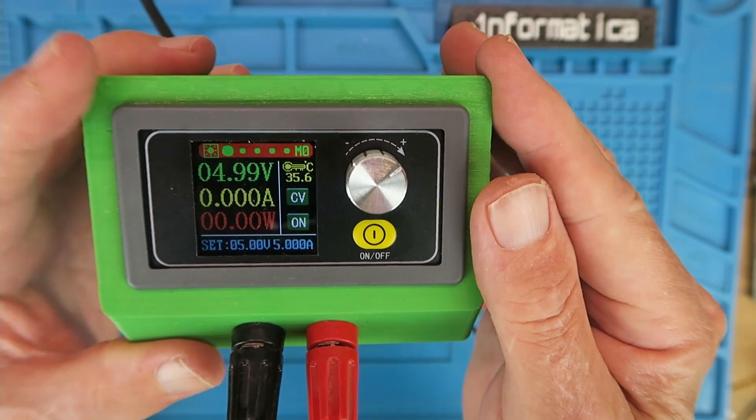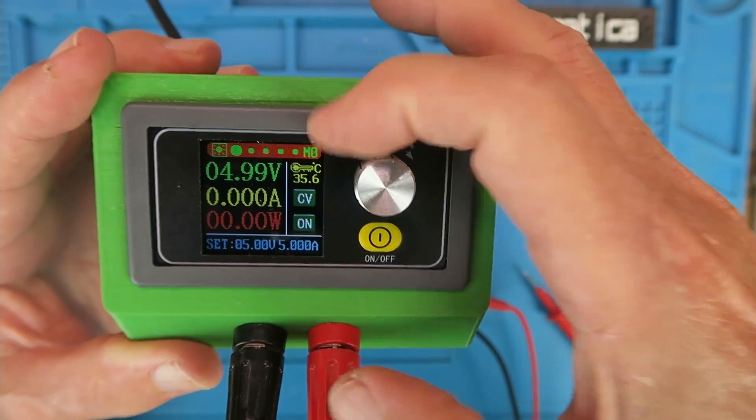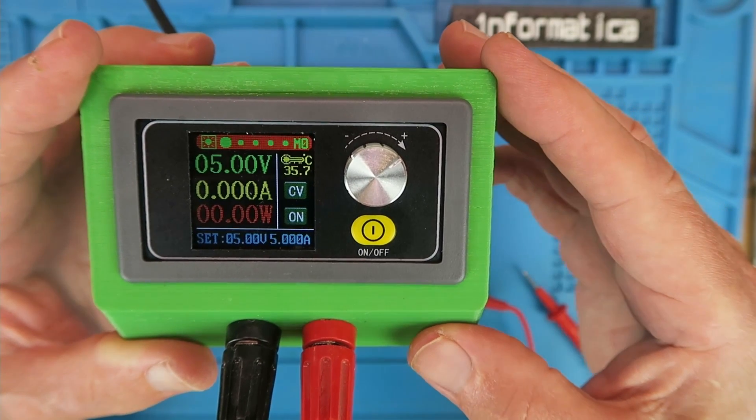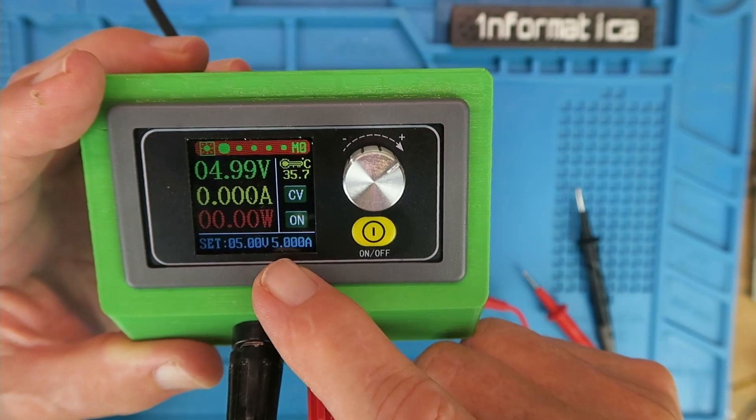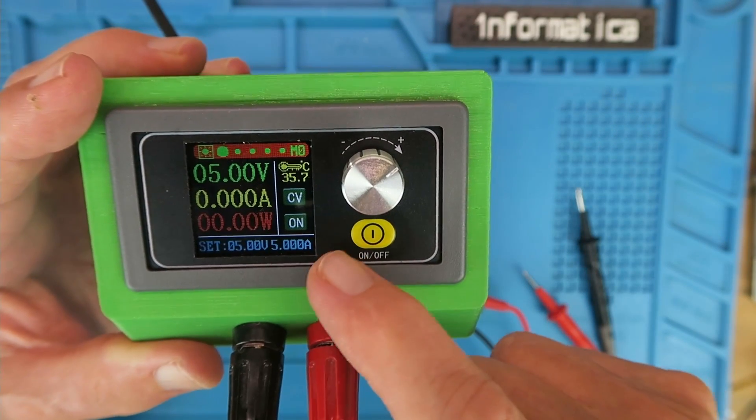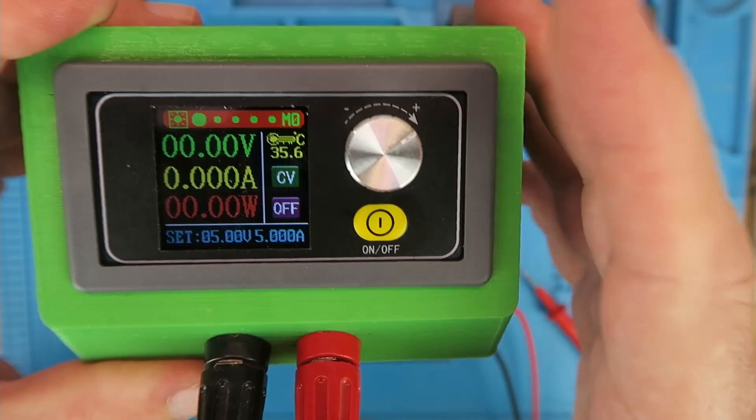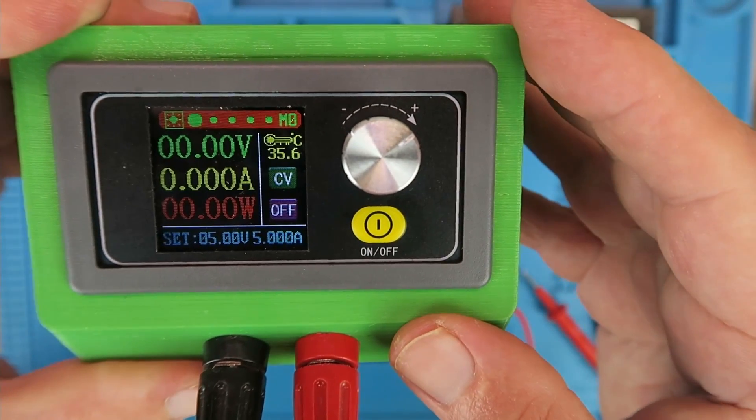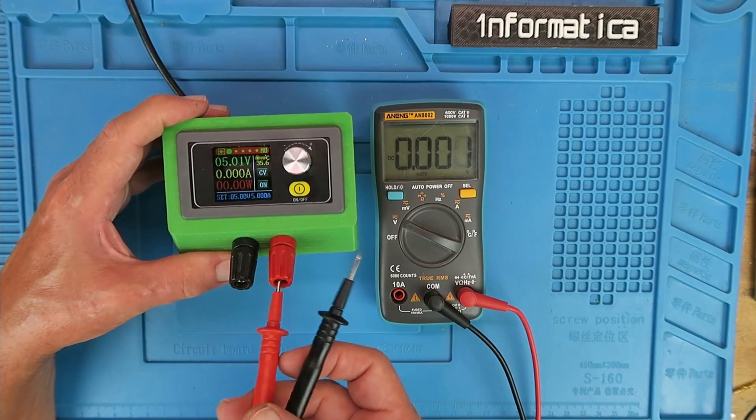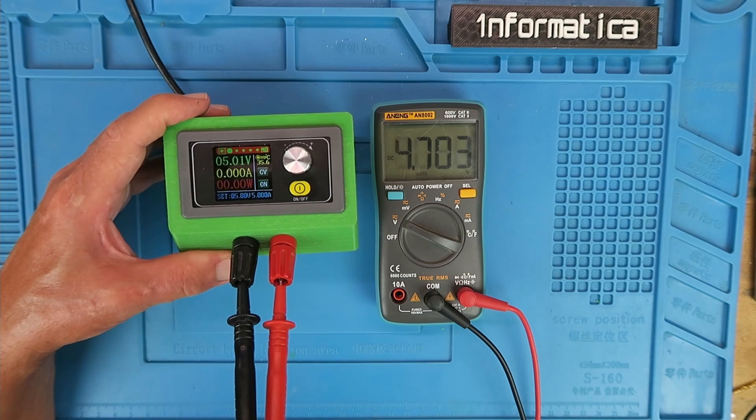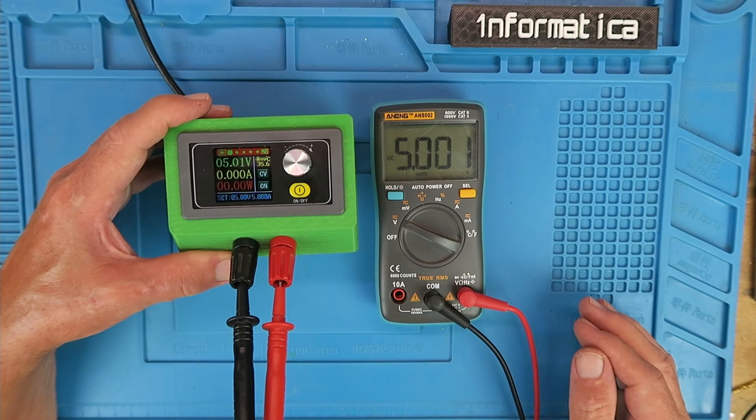If you have any specific questions, then please ask in the comments down below. At the end here, M0, that is the first memory location. There are ten available, M0 through M9. M0 is set to 5 volts and a maximum of 5 amps. It's switched off at the moment. It should start up with no load in constant voltage mode. If I switch it on then no load. Let's just check what the output voltage is according to the meter, and it's as near as spot on 5 volts as we would expect.